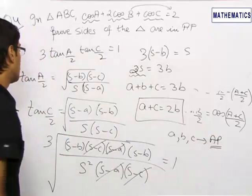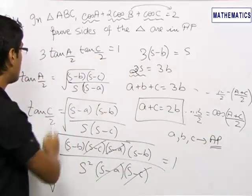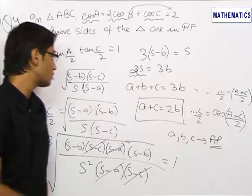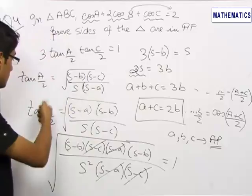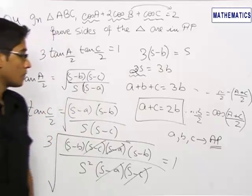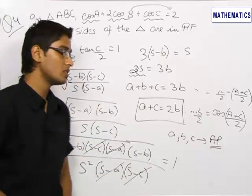Hence, a, b, and c are in AP. The important takeaway from this question is using the formula tan(A/2) = √[(s-b)(s-c)/(s(s-a))] and similarly for tan(C/2) to reach the final result.